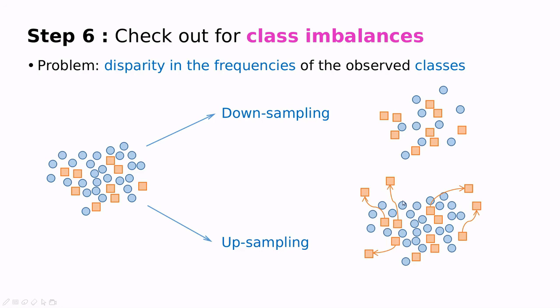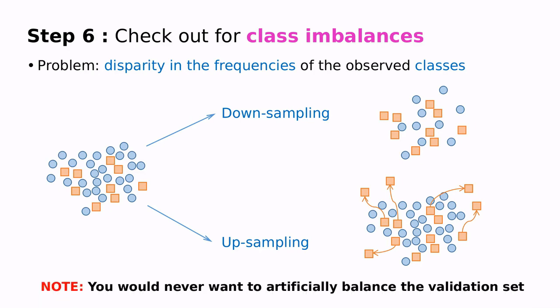Another thing you can do is up-sample the orange squares. What do I mean by up-sample? I create duplicates of these squares randomly in order to have almost the same number of squares and circles. This is very dangerous. Of course, you have to do this in the training set, but never in the validation set.